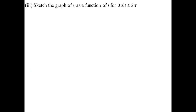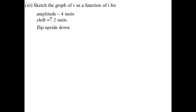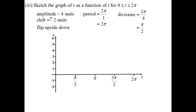Now we draw the graph. The amplitude is 4 and it's shifted up 2 units, flipped upside down because it's negative cosine, with period 2π. Marking divisions at π/2, we draw a horizontal line at 2 since it winds around that line. As it's a flipped cosine, we start at the bottom, shifted up to −2, then go up and down to produce the graph.